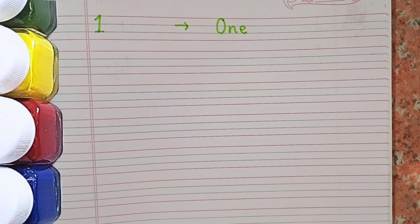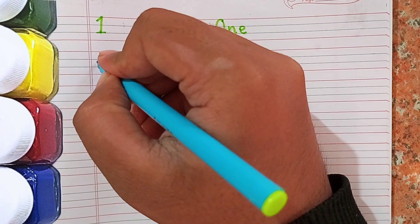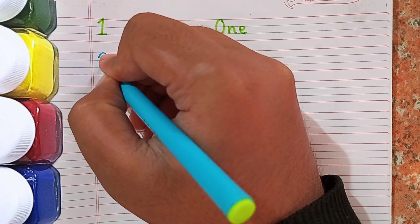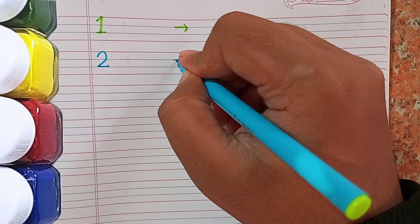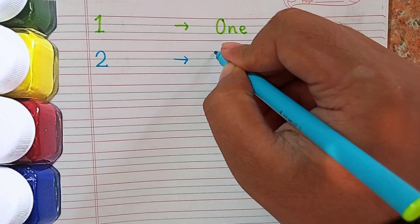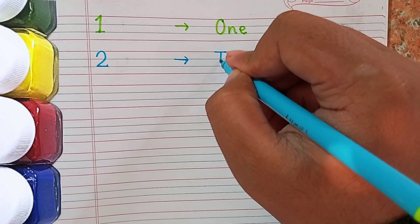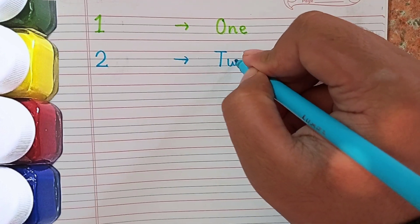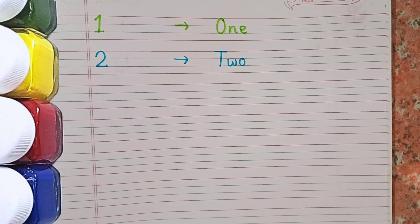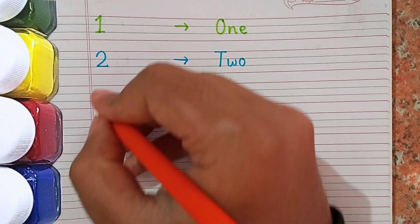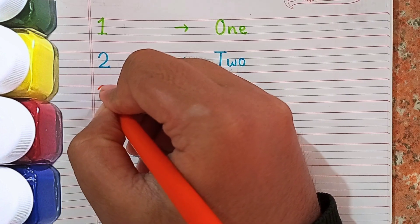After 1 the next number will be 2. Now I am writing 2. This is 2 and the spelling of 2 is T-W-O. Repeat the spelling with me: T-W-O.